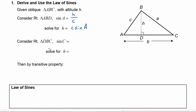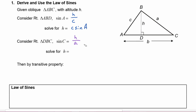Now let's consider the other right triangle, DBC. If we find the sine of angle C, it will be its opposite leg H divided by its hypotenuse, a. Solving this equation for H, we cross multiply and get that H is equal to a times the sine of C.